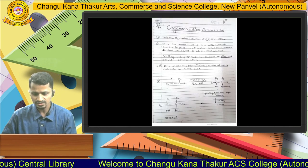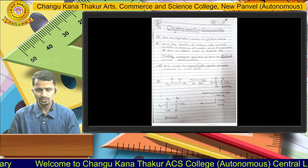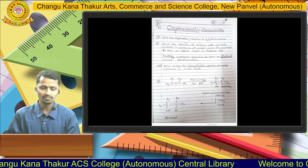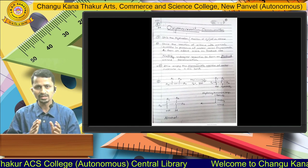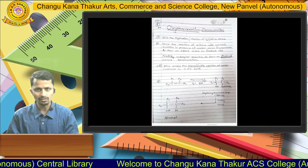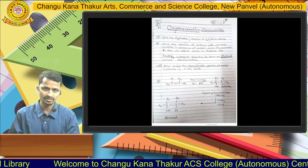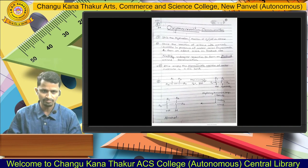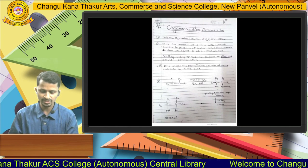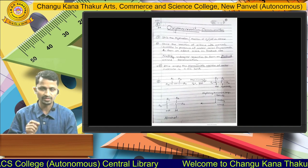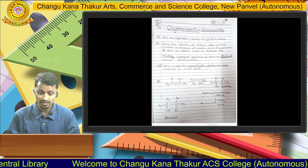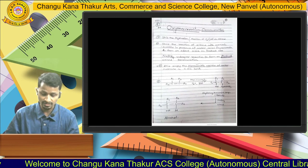The next reaction to learn is the oxymercuration-demercuration reaction. Oxymercuration-demercuration is simply the addition of a water molecule to an alkene according to Markovnikov's Rule. It is the reaction of an alkene with mercuric acetate to form a hydroxymercury compound — this is the oxymercuration step. This hydroxymercury compound then undergoes reaction with sodium borohydride to give the final alcohol product.